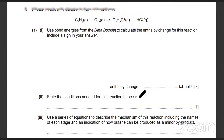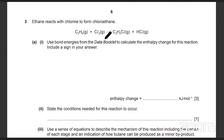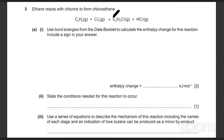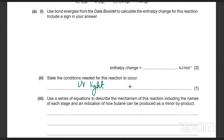There's this reaction: ethane with chlorine. What type of reaction is this? Free radical substitution. The conditions needed are ultraviolet light.